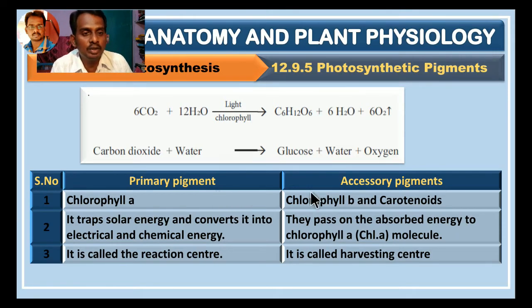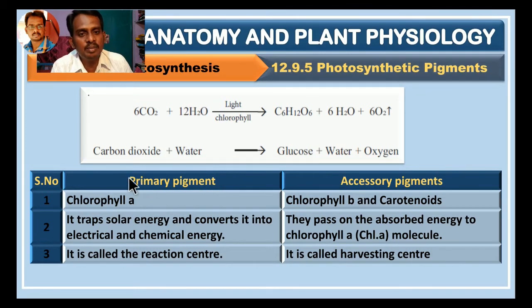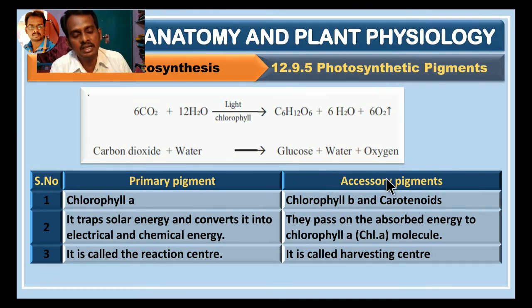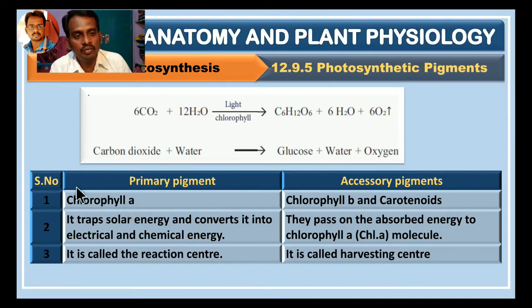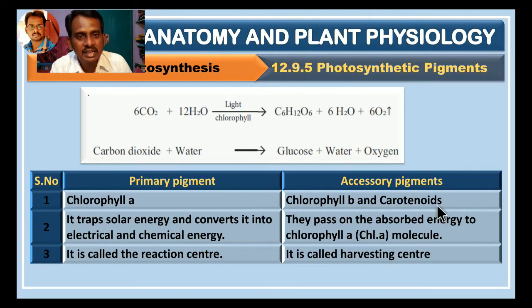There are two types of pigments responsible for the photosynthesis process. One is primary pigment and another one is accessory pigment. The primary pigment is Chlorophyll A. Chlorophyll B and carotenoids are accessory pigments.